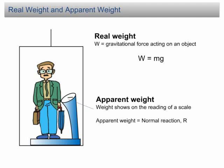Apparent weight is the weight shown on the readings of a scale or balance. The apparent weight is equal to the normal reaction. If the normal reaction is 60 N, the apparent weight is 60 N. If the normal reaction is 100 N, then the apparent weight is 100 N.